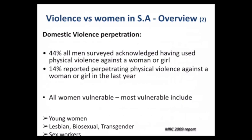Of men who rape, 73% — the vast majority — do so by the age of 20. So if we're looking at targeting interventions, we really need to target young men to change ideas and prevent rape. Regarding domestic violence perpetration in the same study, 44% of men surveyed said they had used physical violence at some stage against a woman or girl, and 14% reported using violence against a woman or girl in the last year.